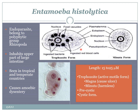The pseudopod in Entamoeba histolytica is specifically known as the lobopodium, which also helps in locomotion. Inside, the nucleus is encrusted with a fine layer of chromatin granules. Other inclusions like food vacuoles are also present, similar to organisms like Paramecium. Besides the trophozoite, it can also exist in pre-cystic and cystic forms. Remember, the trophozoite magna form is the most dangerous.